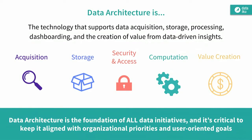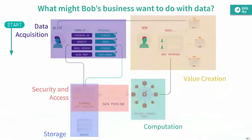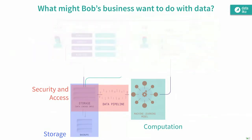Just in that simple example, we walked through five different steps of data architecture. We're going to break this into roughly: acquisition, storage, security, the computation he was doing on his machine learning model, and then the value creation part. You can think about these steps even in a really simple architecture — like how you would do this on your laptop. So keeping these components in mind, for today we're going to focus on the storage, security, and computation parts of the data architecture.